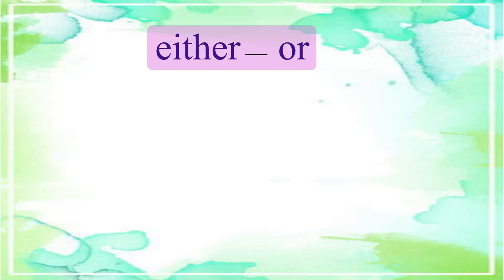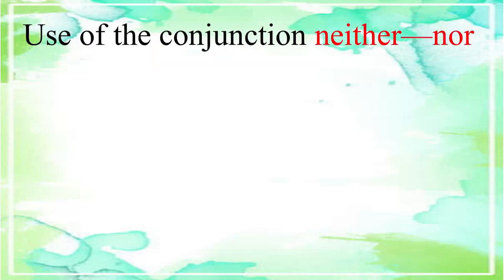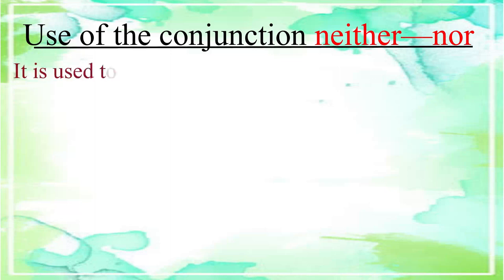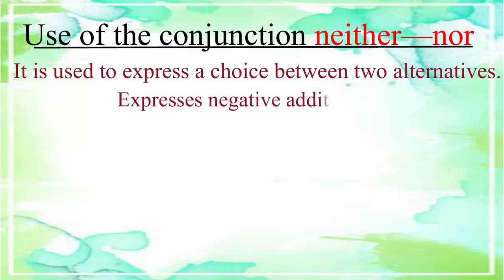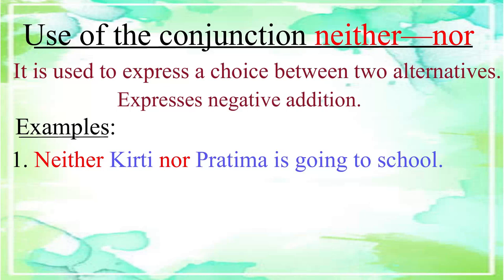Similar to 'either...or', the conjunction 'neither...nor' is also used to express a choice between two alternatives. But 'neither...nor' is used to express negative addition. For example: 'Neither Kirti nor Pratima is going to school.'